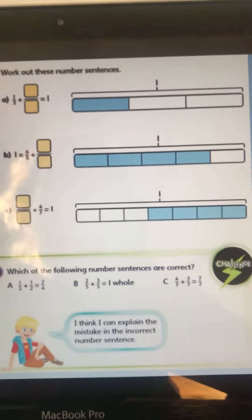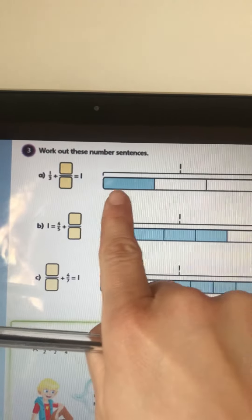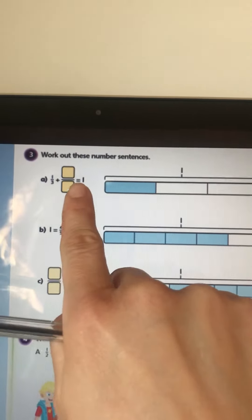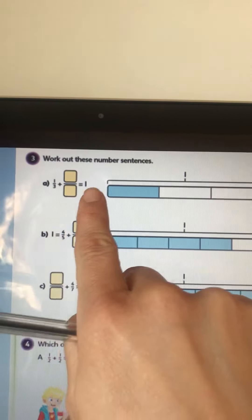Okay, so for question A, one third plus what, so that's our colored in bit, that's the one third, plus what equals one? One, two, so it has to be two thirds, so it would be two thirds equals one.